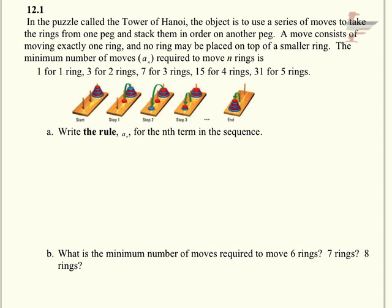The minimum number of moves, a_n, required to move n rings is 1 for 1 ring, 3 for 2 rings, 7 for 3 rings, 15 for 4 rings, and 31 for 5 rings.